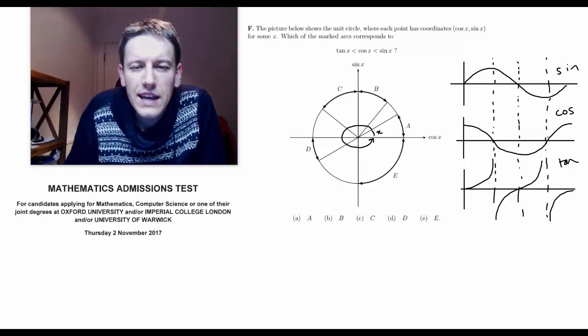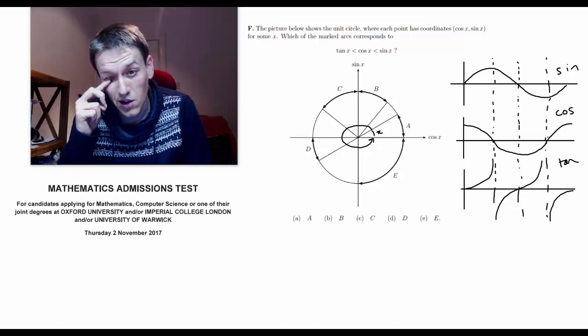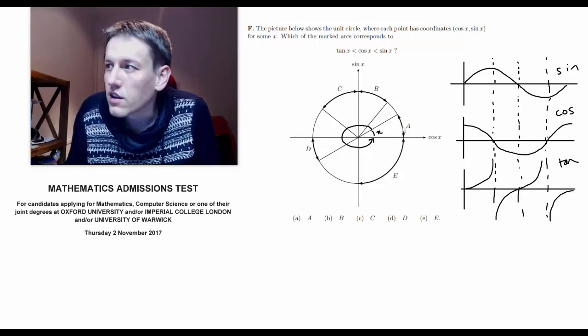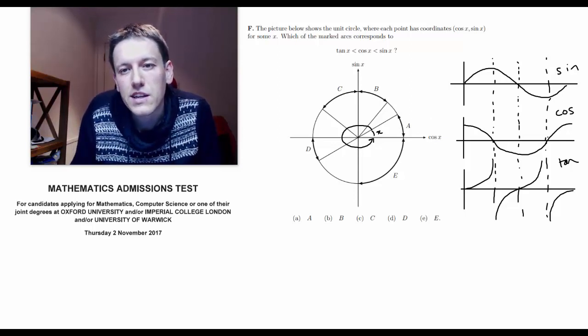Now, we want tan to be the smallest and then cos and then sin. So actually let's also look at these a, b, c, d and e where they're going to be, which values of x roughly.